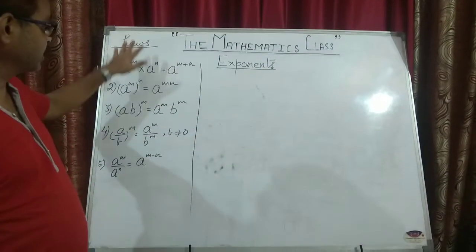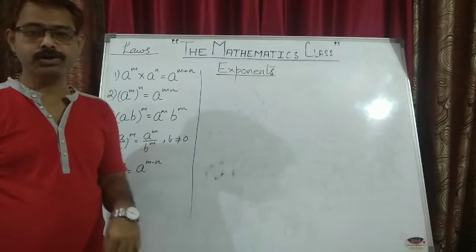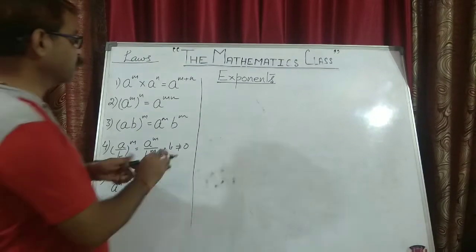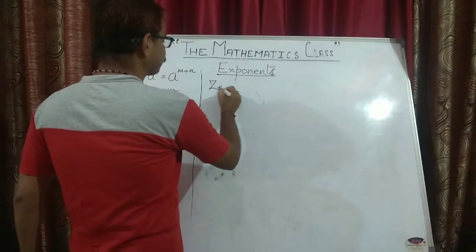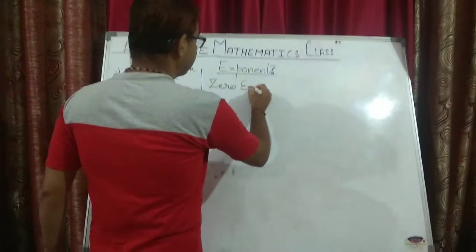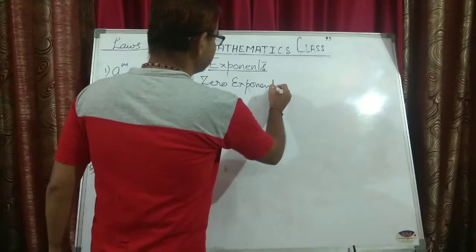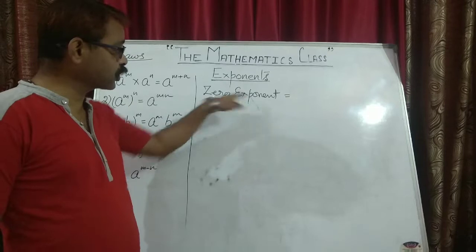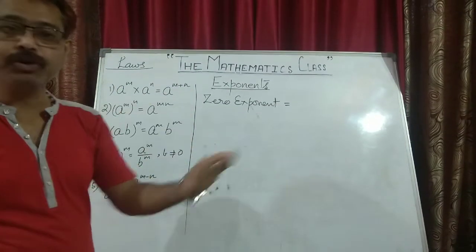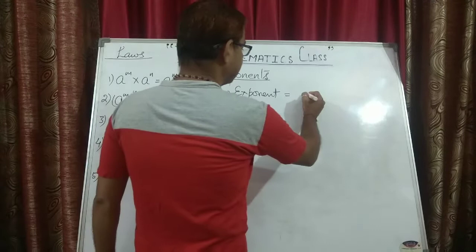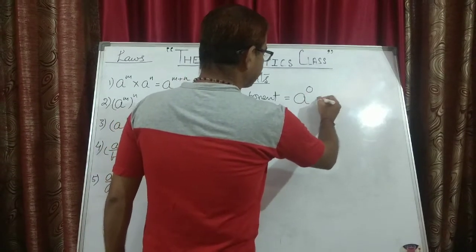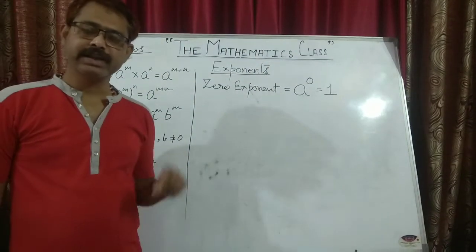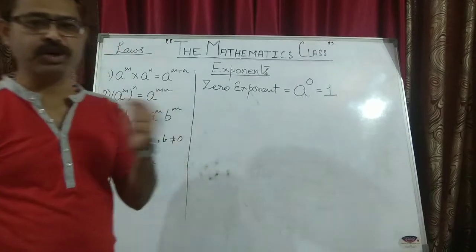Now these are the laws. But before I explain the laws, we will discuss two types of exponents. First is zero exponent. What is zero exponent? You know exponent means power. Zero exponent means something to the power zero — if I say a to the power zero, it always means one.